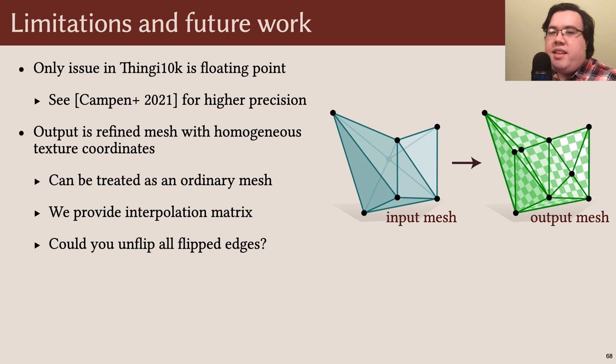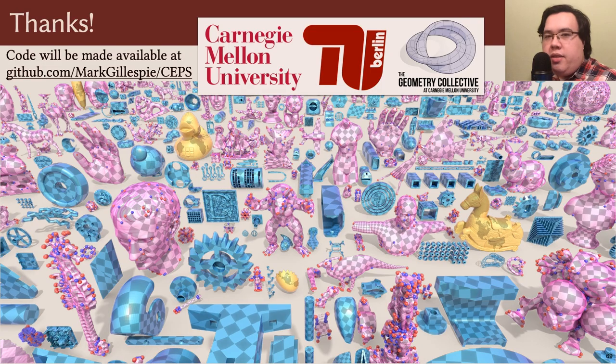Nonetheless, it would be interesting to investigate schemes to simplify the output mesh, perhaps by trying to unflip any edges that were flipped during optimization. And finally, if you only care about computing locally injective maps rather than full conformal maps, then you don't need to flip to intrinsic Delaunay at the beginning of our algorithm. There may be other possible optimizations in this setting, too. Thank you for listening.